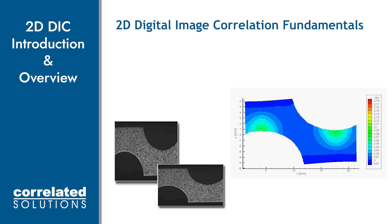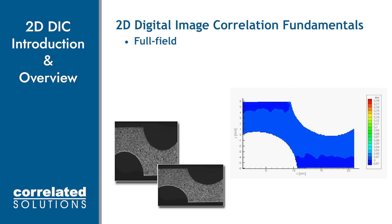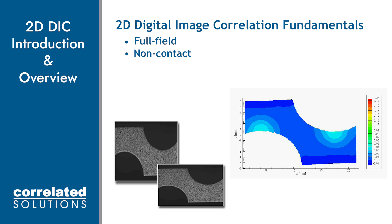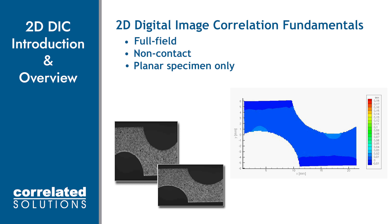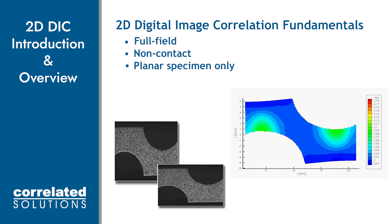2D digital image correlation, or DIC, uses images from one camera to obtain full field shape, deformation, and strain data. It is non-contact. While 3D DIC allows for any shape and any motion, for 2D DIC we have only 2D information from one camera, so the specimen must be flat and planar to the imaging sensor. Out-of-plane motion will cause a bias in our 2D data, so motion towards or away from the camera should not occur for 2D DIC.